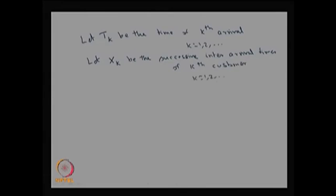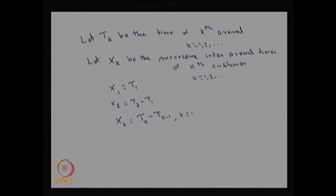Here k = 1, 2, and so on. T_k is the time point, while X_k is the inter-arrival time. X_1 = T_1 − T_0, and since T_0 = 0, X_1 = T_1. X_2 = T_2 − T_1, which is the time between the first and second arrivals. In general, X_k = T_k − T_{k−1}, with T_0 = 0.